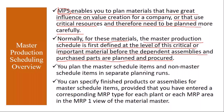First they will plan MPS items — Master Production Scheduling items. After that, they will plan dependent materials using MRP. You plan the Master Scheduling items and non-Master Scheduling items in separate planning files. So MPS items are planned using MPS and the remaining non-MPS items are planned using MRP, in separate planning runs.